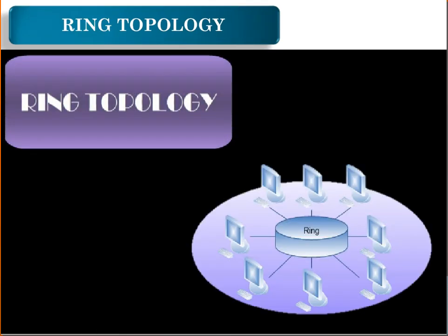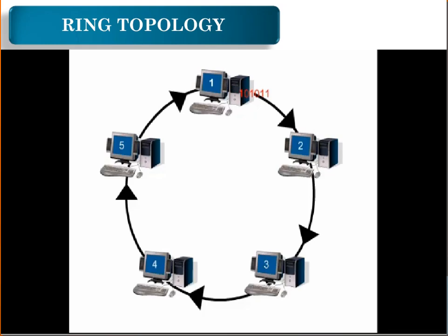Ring topology — the ring topology is a computer network configuration where each network computer and device is connected to each other, forming a large circle. Each packet is sent around the ring until it reaches its final destination.